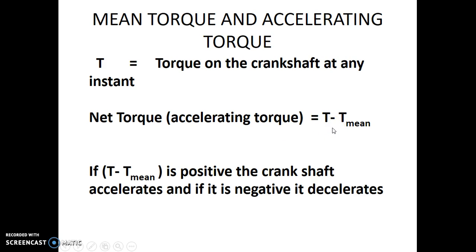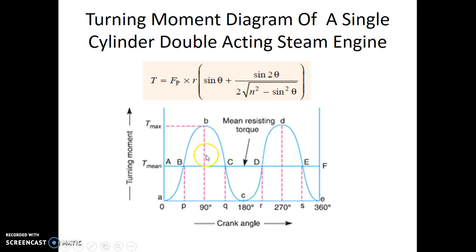If the net torque value is negative, the crankshaft will be decelerating or retarding, and therefore the angular velocity keeps on reducing. Looking at the curve, during the period of rotation from O to P, the applied torque is always less than the mean torque. Therefore, during that period, deceleration acts on the crankshaft, the angular velocity keeps reducing, and the energy of the crankshaft keeps decreasing.